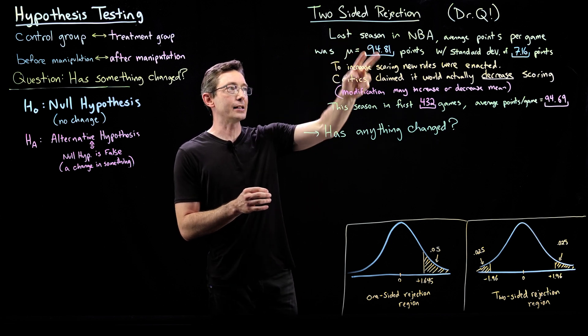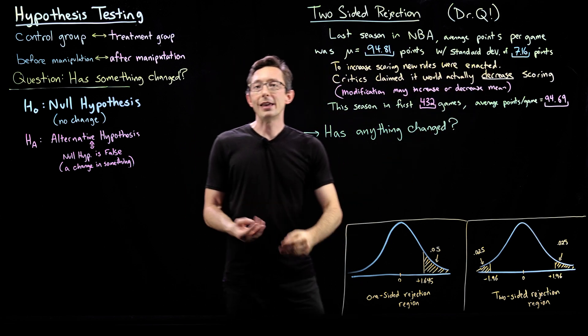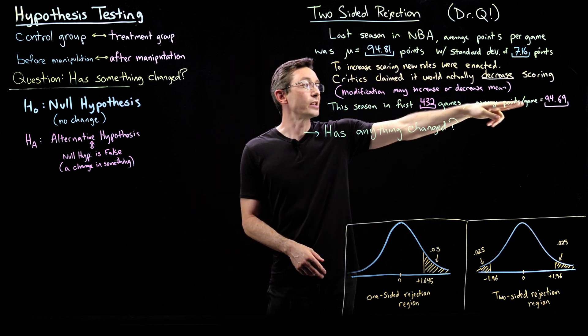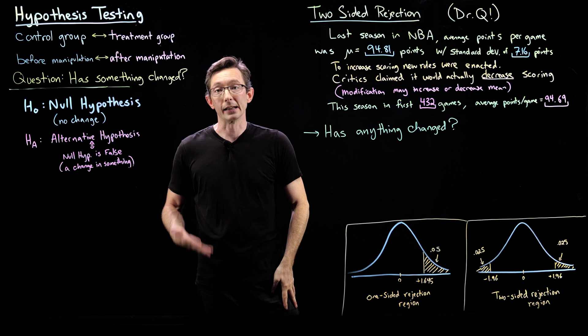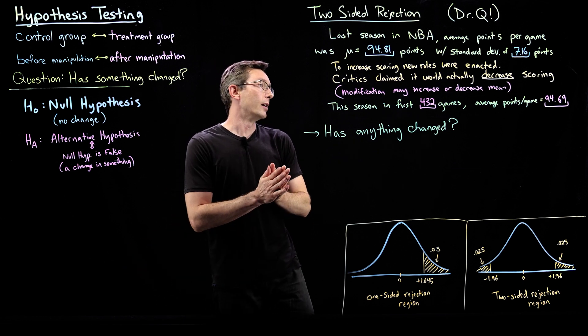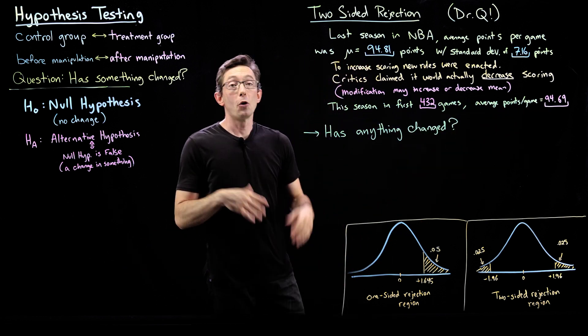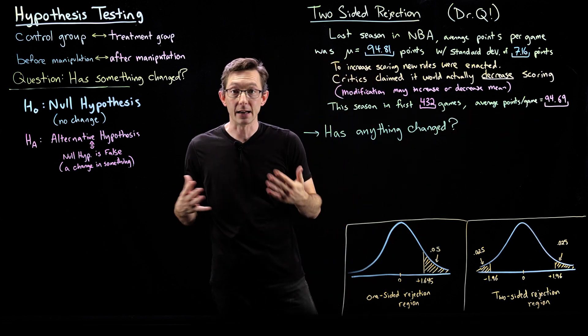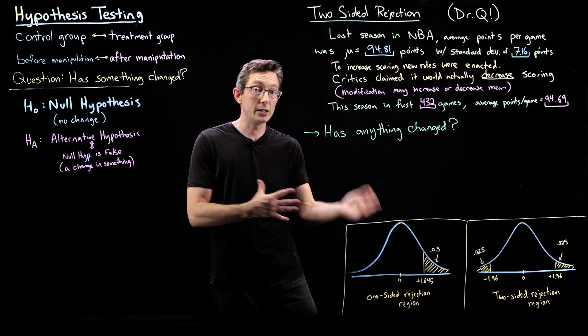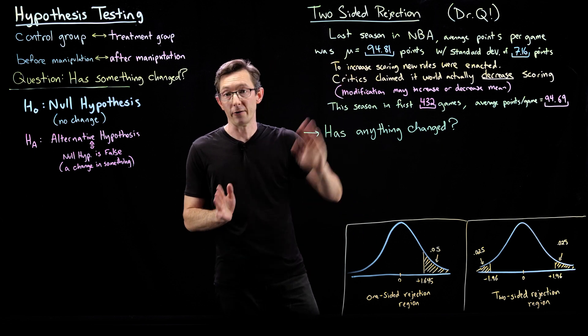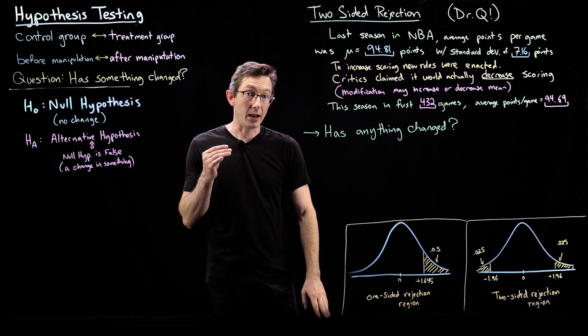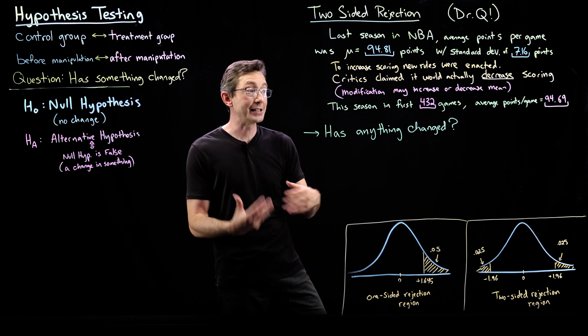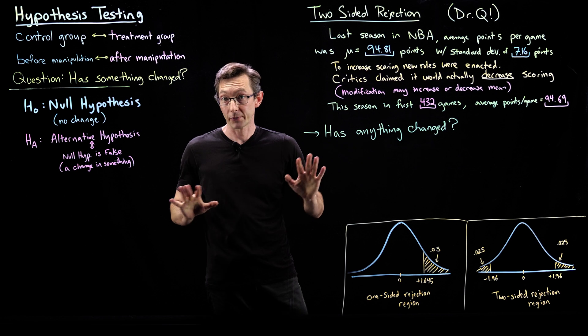The data from last season is here, and this season in the first 432 games, the average points per game is 94.69. You look at these and they actually look really close: 94.81, 94.69. Too hard to tell if these are the same distribution, different distribution, same mean, different mean. We're going to use a two-sided hypothesis test to get some idea of whether it's statistically significant that something has actually changed.